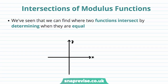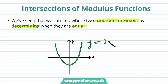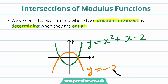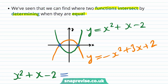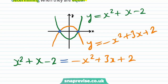So how can we determine the intersection of modulus functions? We've seen that we can find where two functions intersect by determining when they are equal. Let's say we have two functions: the first one is y equals x squared plus x minus 2, and the second one is y equals minus x squared plus 3x plus 2. If we'd like to determine the location of these two intersection points, then we need to solve the equation x squared plus x minus 2 equals minus x squared plus 3x plus 2. When we solve the equation we get the solutions x equals minus 1 or x equals 2.